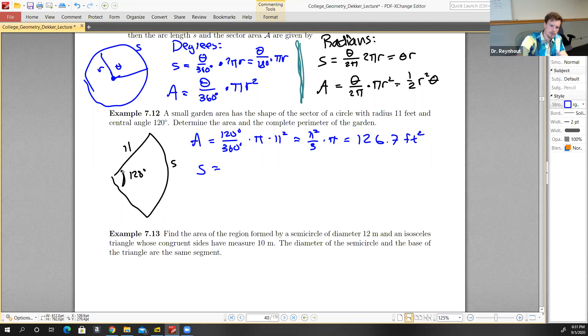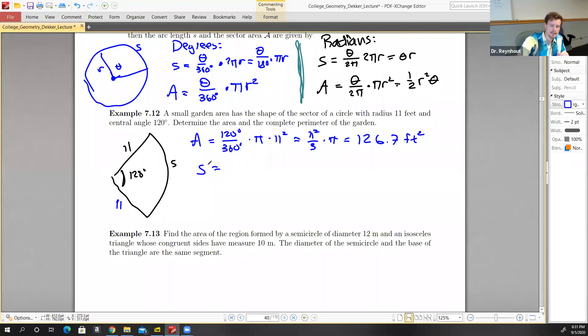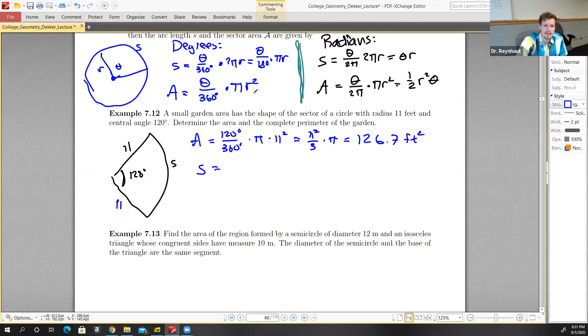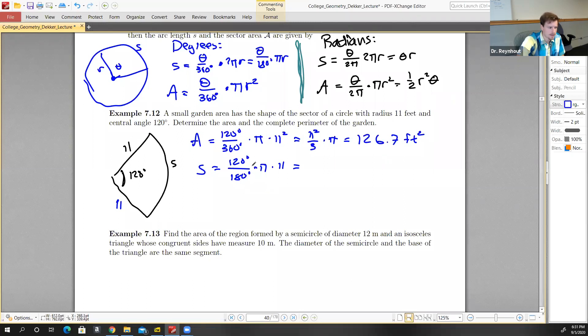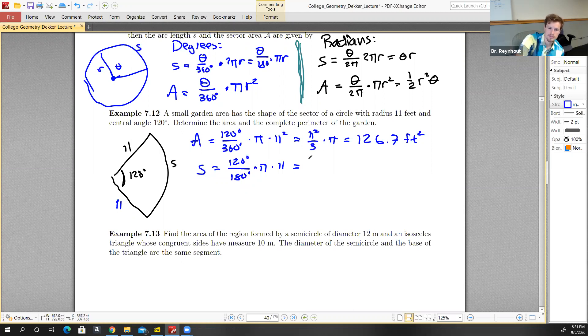To calculate the arc length, we know both side lengths are 11. The arc length would be theta over 180, so 120 degrees divided by 180 degrees times π times r. 120 over 180 simplifies to 2 thirds, so 2 times 11 is 22, giving us 22 thirds π, which works out to 23.0 feet.